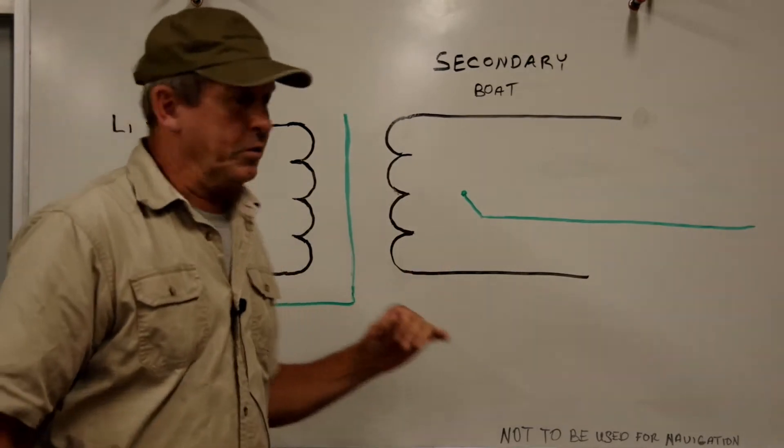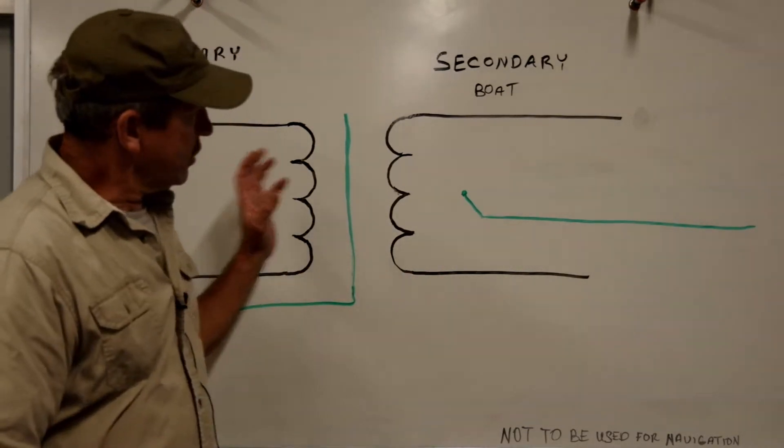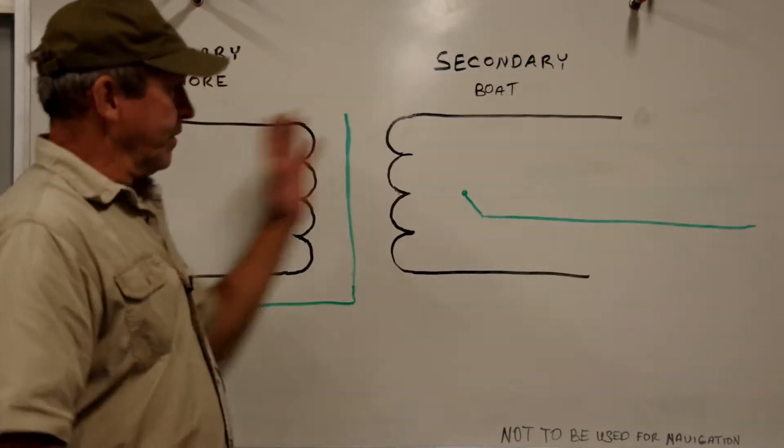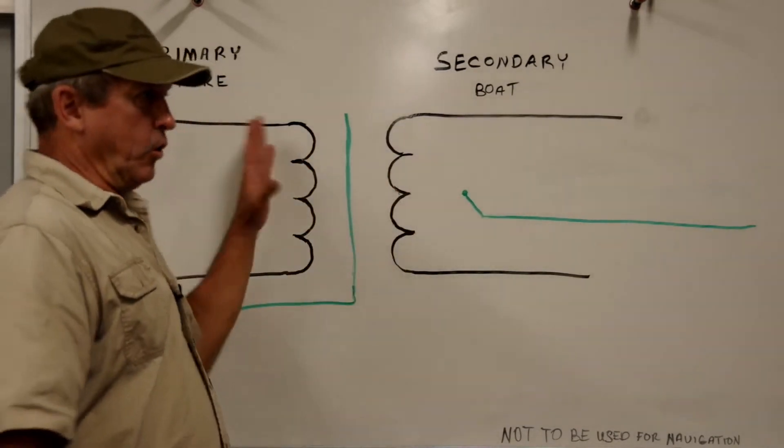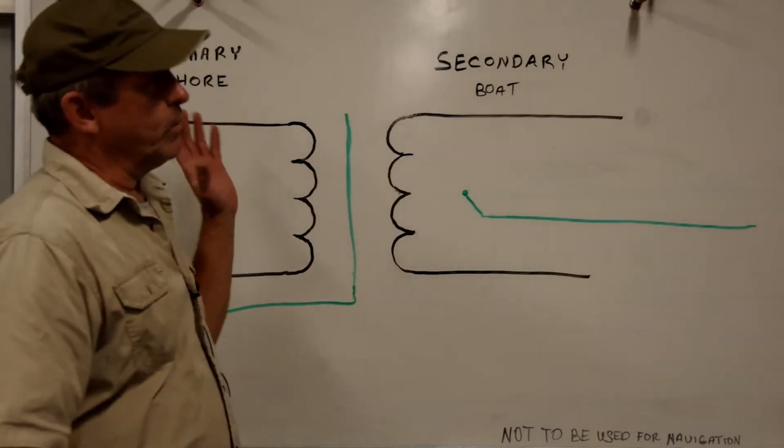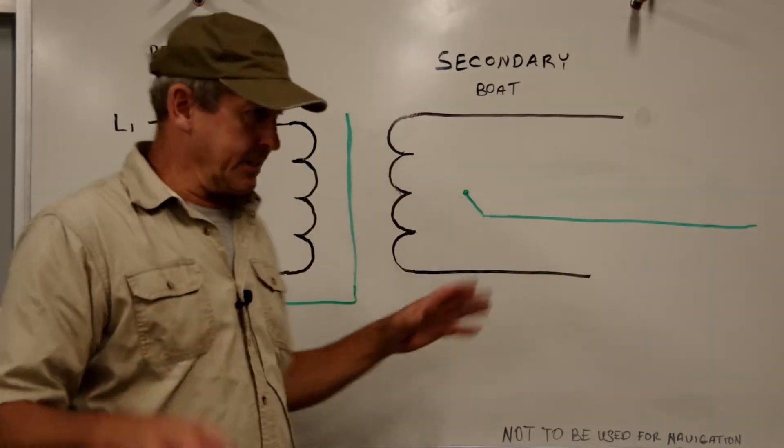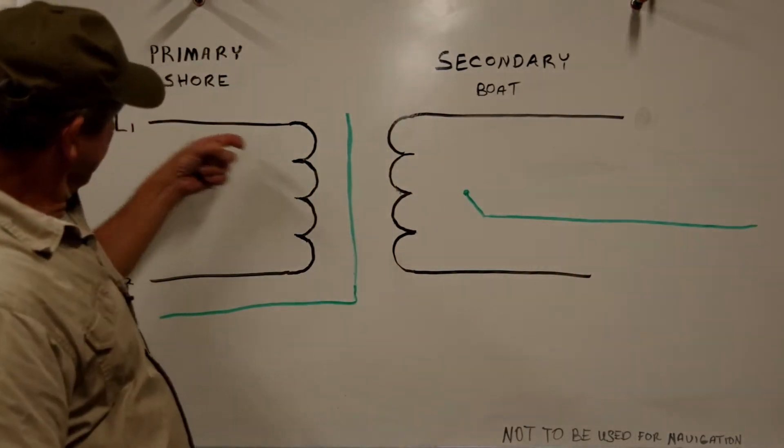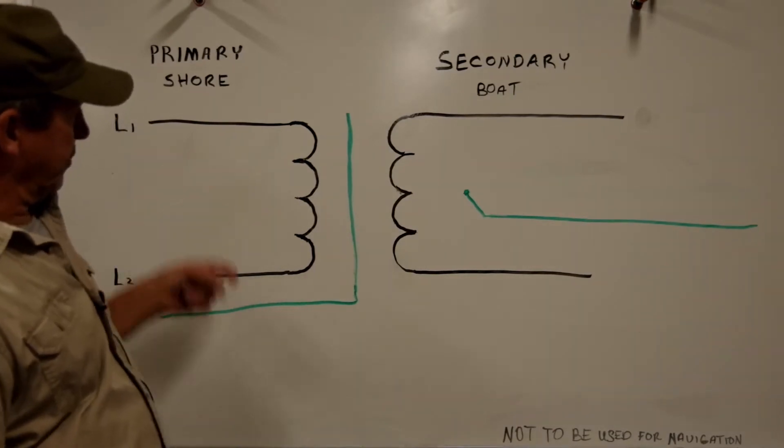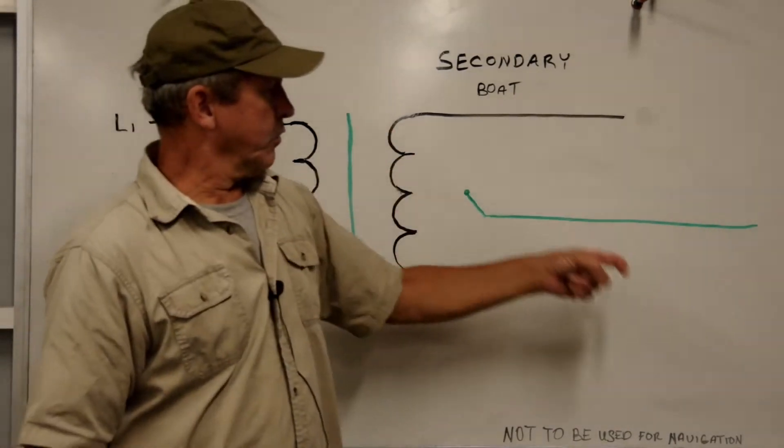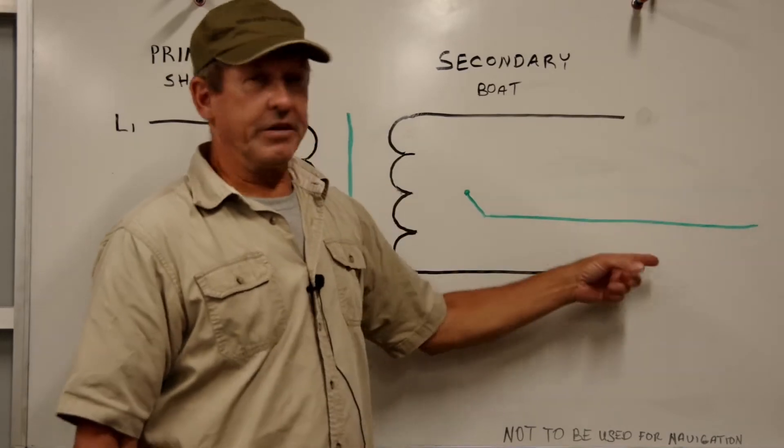Now the beauty of these things is we say isolation transformer—we've isolated our boat from the dock. There is no physical, mechanical, electrical connection between the boat and the dock, so we're isolated. We send 240 volts in on the primary, we get 240 volts out on the secondary.